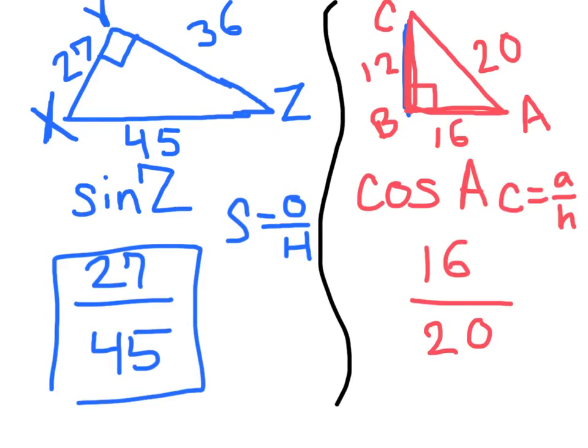And if you would like to simplify that down, you can. So divide both by 4, and 4 over 5. So, the cos of A is equal to 4 fifths.